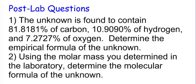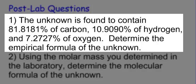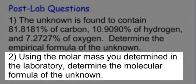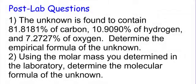For post-lab questions: number one, you can actually do this before you walk into the lab — the unknown is found to contain 81.81% carbon, 10.9090% hydrogen, and 7.2727% oxygen. Determine the empirical formula of the unknown and show all your work. Number two, using the molar mass you determined in the lab, determine the molecular formula of the unknown.